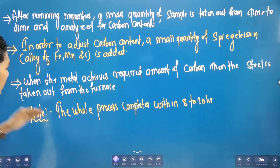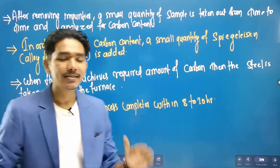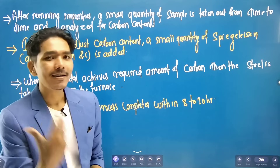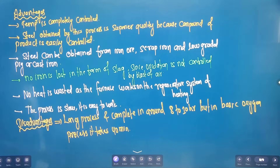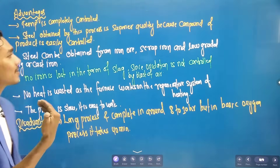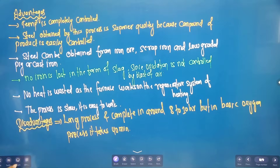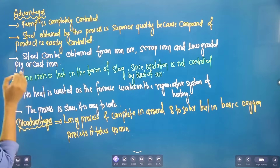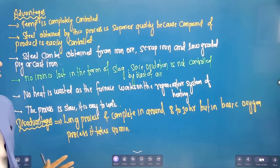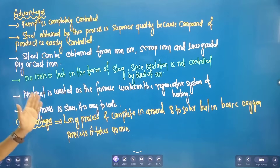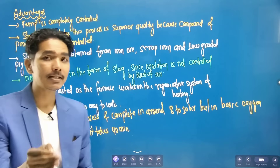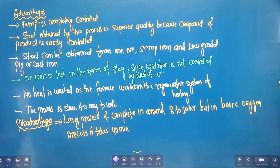The whole process is completed in 8 to 10 hours. This is a very lengthy process. The advantages of this process are: we can control the temperature; the steel obtained is of superior quality; steel can be obtained from iron ore, scrap iron, and low-grade iron; and the material can be recycled so no iron is lost. Oxidation using hematite and a regenerative system are also used.